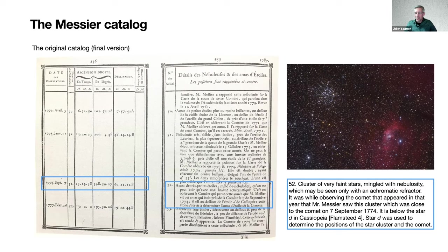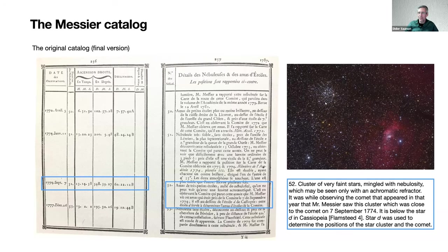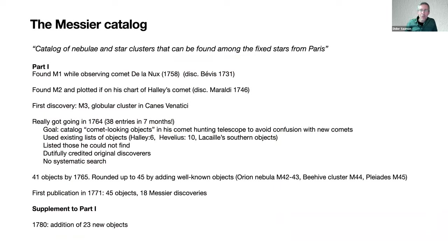Here's a picture of Messier 52 — a beautiful, rich cluster of stars. The nebulosity he refers to is not the so-called bubble nebula visible in modern images, which would have been far too faint for him to see. What he was referring to is that in his small telescope, even the best available at the time — the achromatic refractor — the faintest stars in the cluster appeared as some kind of nebulous glow behind the brighter stars. But there is no true nebulosity in this cluster.